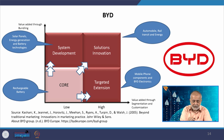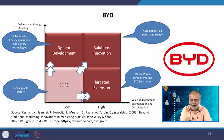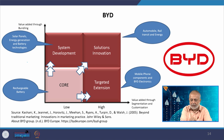Correlating BYD with the four quadrants: core — rechargeable battery; targeted extension — mobile phone components and BYD Electronics; system development — solar panels, energy generation, and battery technologies; solutions innovation — automobile, rail transit, and energy. Their progression justifies all four quadrants in one way or another.